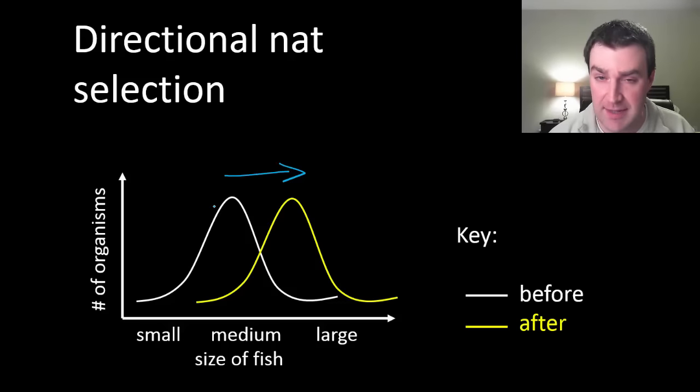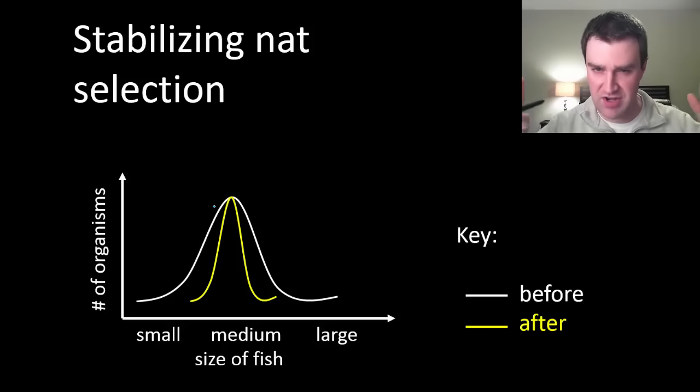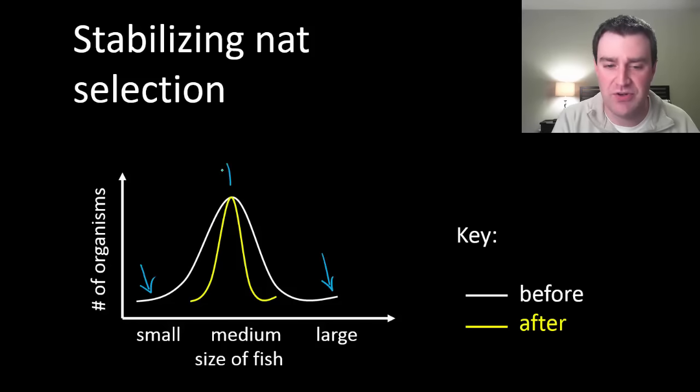The second type of natural selection is stabilizing selection. It's just the idea that sometimes the intermediate organisms survive and reproduce the best, and so we see kind of a narrowing of the bell curve. Organisms at either extreme don't survive very well, but organisms in the middle do survive quite well. That's called stabilizing selection.